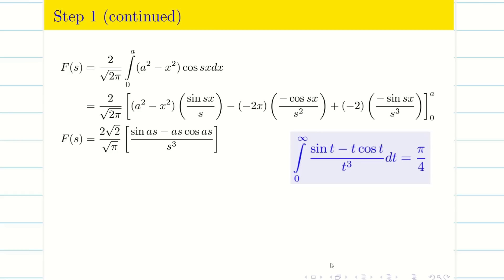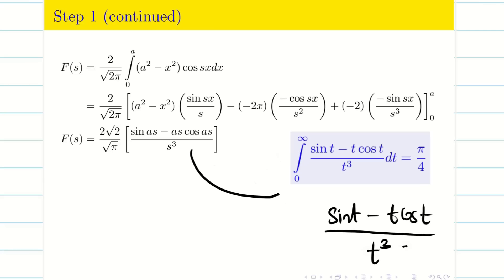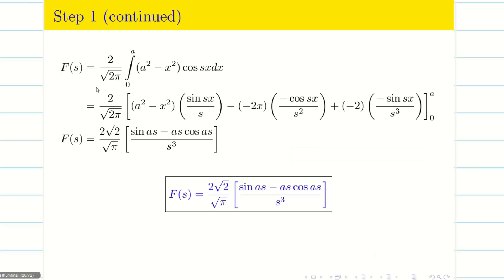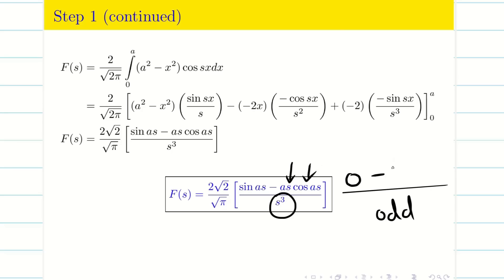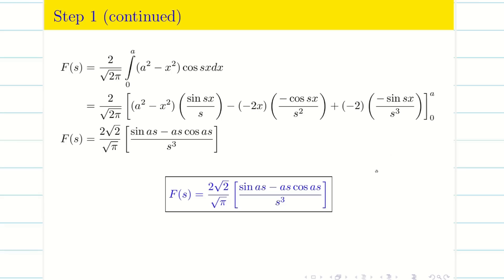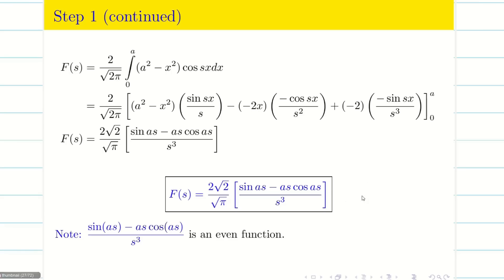Checking against the target deduction — which involves (sin t - t·cos t)/t³ — this F(s) matches. Regarding parity: the numerator sin(as) is odd and -as·cos(as) is odd times even = odd, so the numerator is odd; the denominator s³ is also odd; odd divided by odd is even. Therefore F(s) is an even function.